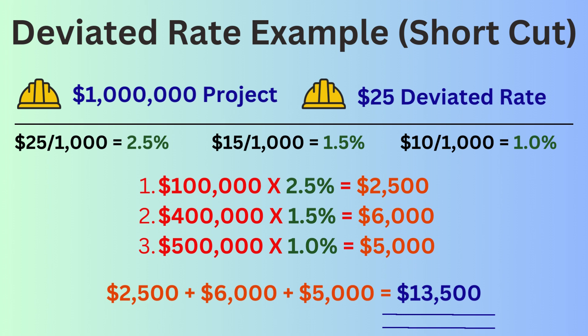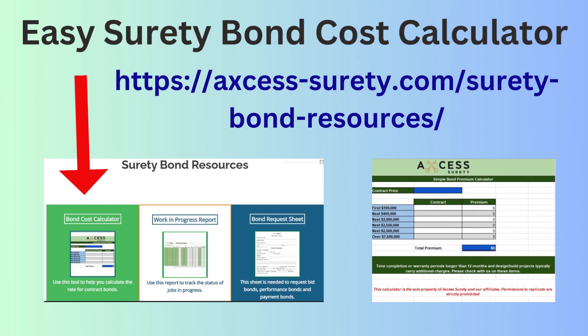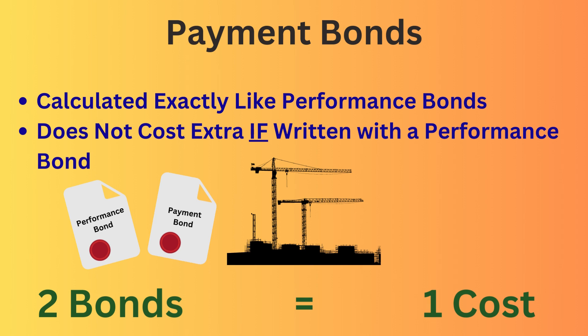Now that you know how the rate is calculated, we can talk about shortcuts. The rate divided by $1,000 is just a percentage, so instead of dividing by $1,000, we can use 2.5% for the first $100,000 of value, 1.5% for the next $400,000, and 1% for the next $500,000. If you do not want to do the calculation yourself, you can find a bond premium calculator at Access Surety — simply enter your rates and the contract amount, and the bond premium will be calculated for you.